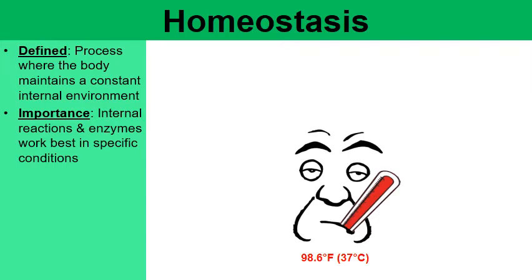Enzymes work in very specific conditions. For example, the human body operates at 98.6 degrees Fahrenheit, or 37 degrees Celsius. If our body temperature rises or falls — if it fluctuates too far away from this normal set point — then many of those internal chemical reactions just won't proceed. The enzymes lose their ability to function.